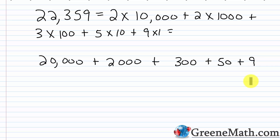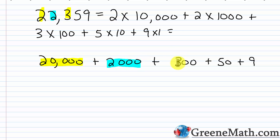By writing this number in expanded notation, we can see the true value of each digit. This 2 has a value of 20,000. This 2 — let me use a different color since they're both 2s side by side — has a value of 2,000, because it's in the 1,000s place. This 3 has a value of 300. This 5 has a value of 50. And this 9 has a value of just 9. Each digit gets its value based on where it is in the number — that's why we call it a place value system.